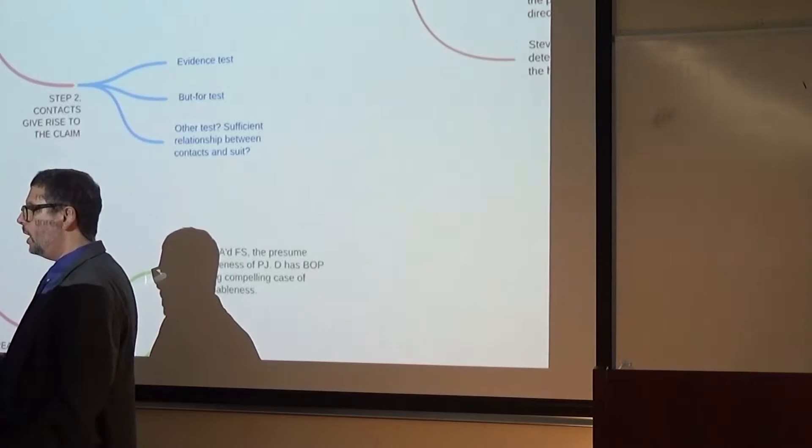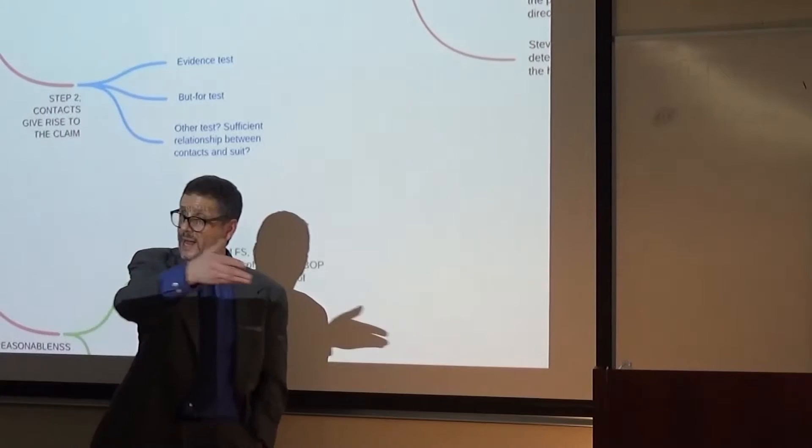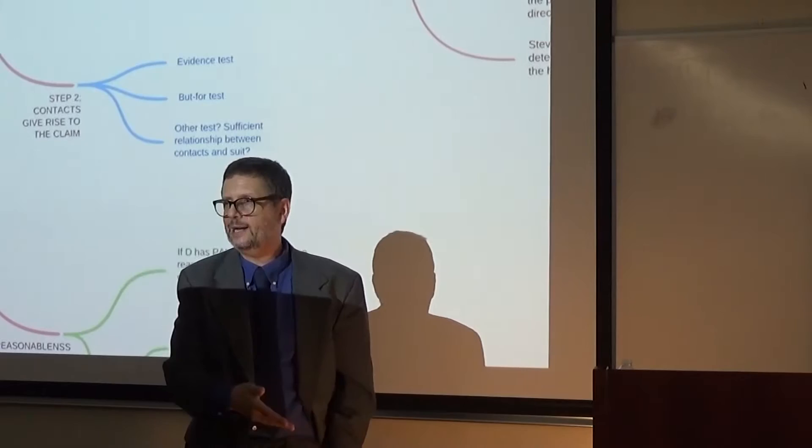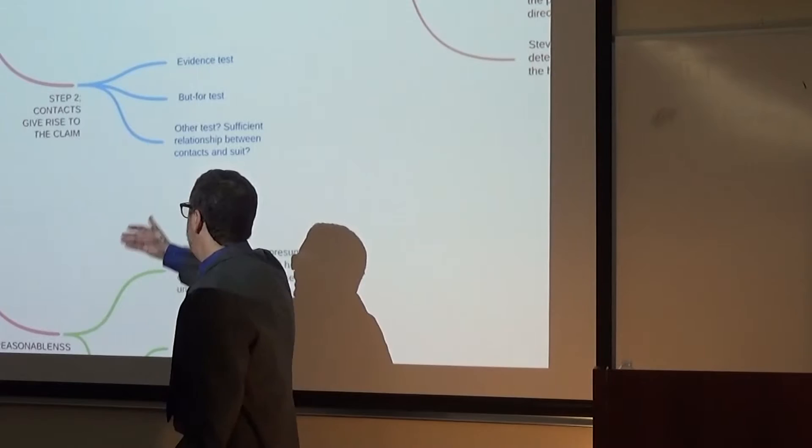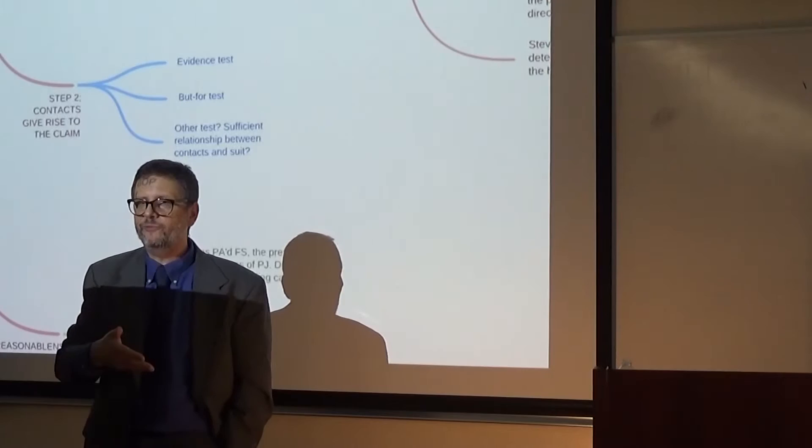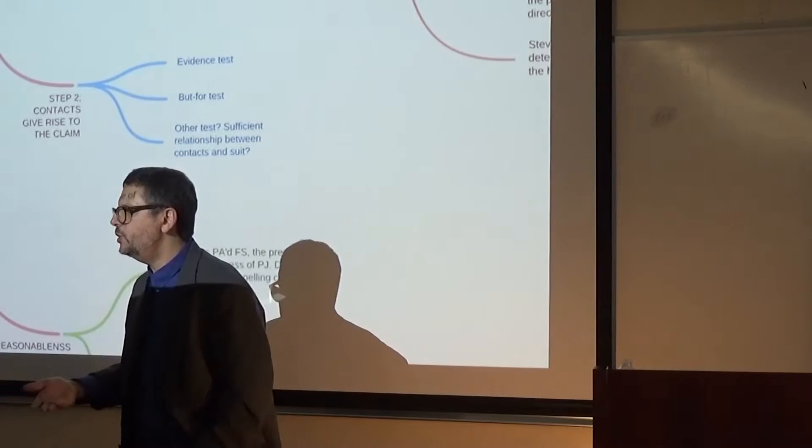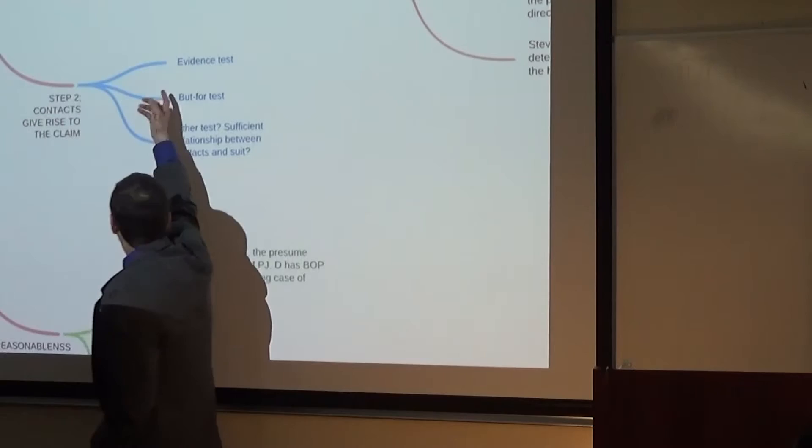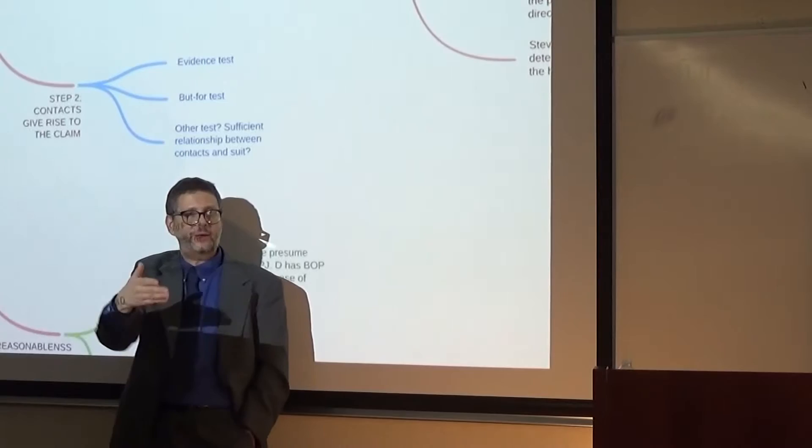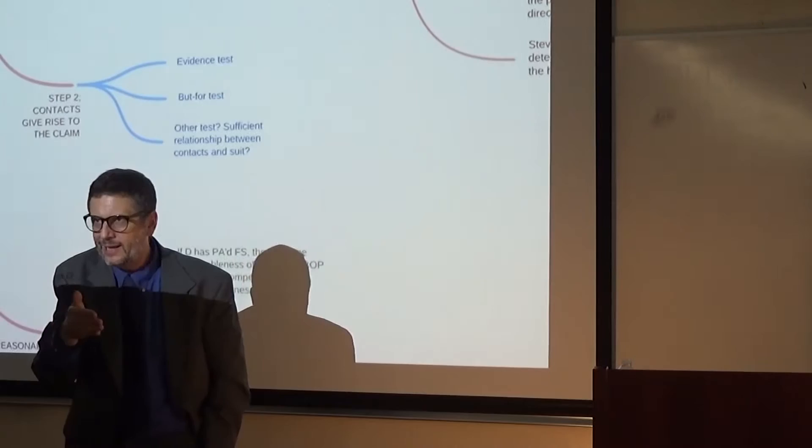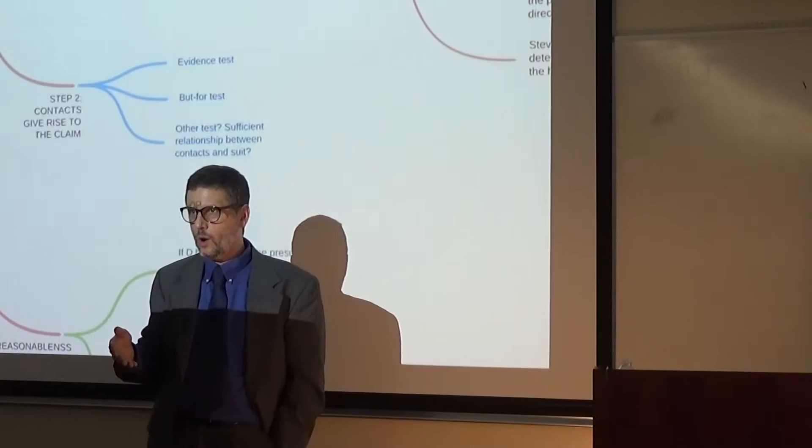The evidence test instead asks, are the contacts themselves evidence of the claim? So say again, I'm sued in California for the slip and fall in Florida. First step, do I have a contact with California? Yes, I sent a solicitation there. Next step, under the evidence test, is the solicitation sent to California evidence of a slip and fall that happened in Florida? The answer here would probably be a no. The evidence used for the slip and fall would be what happened in Florida. So depending on what test you use would determine whether or not those contacts gave rise to the claim. You want to know more about the facts, but in essence, but-for asks, is the contact part of the chain of events that led to the claim? The evidence test asks whether the contacts themselves are evidence of the claim.